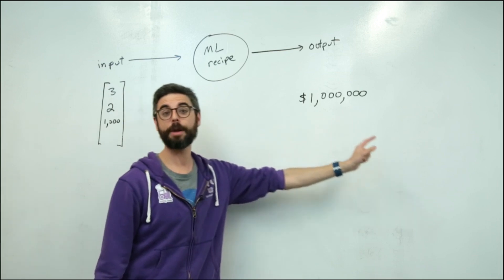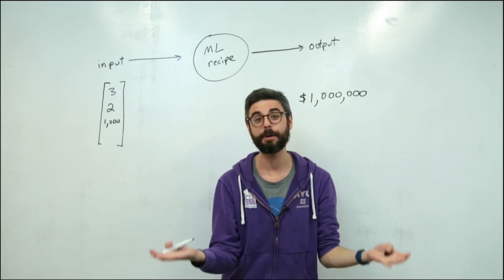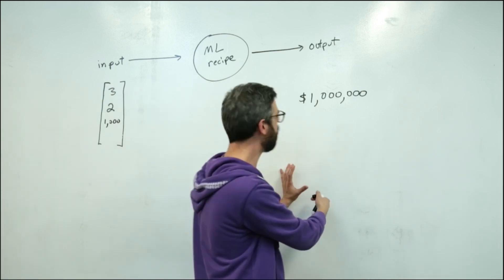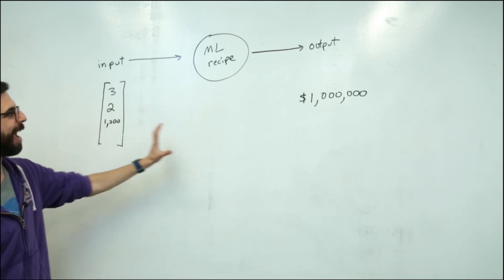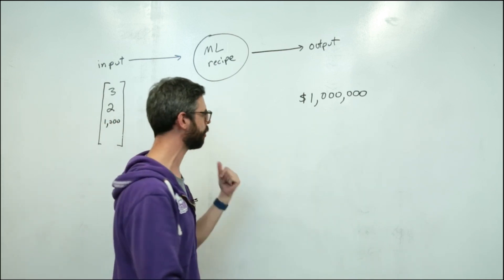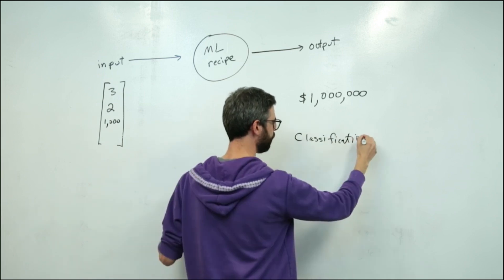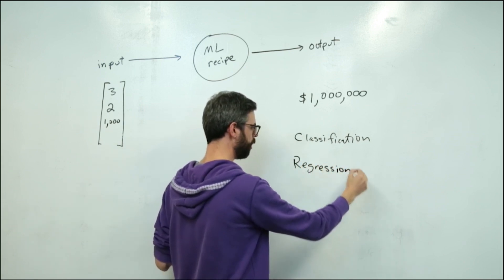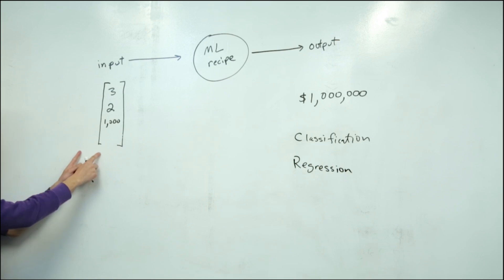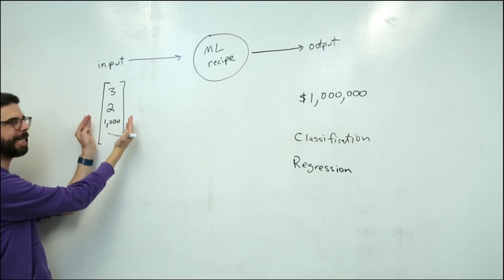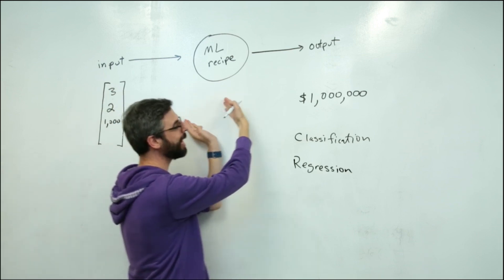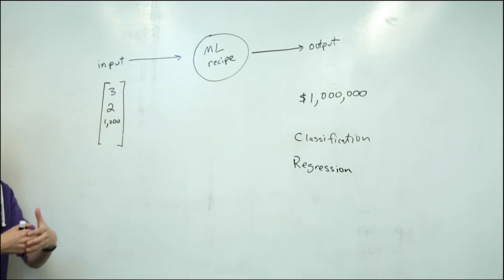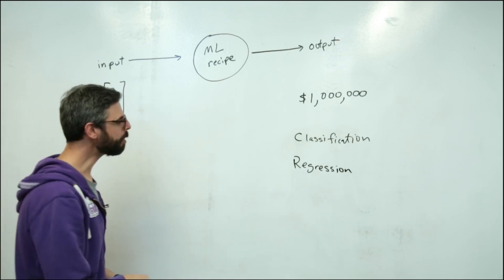So typically speaking, another way of thinking about machine learning is making sense of data. So I have some sort of data, and I want to make sense of it, have some input and some output. So two kinds of output that you'll see in most machine learning algorithms are classification. Another kind of output is regression.